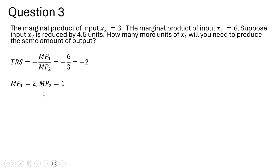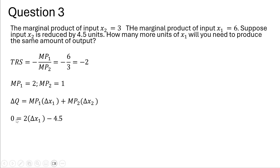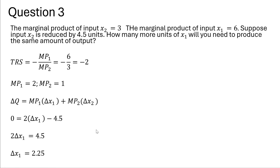Just maintaining that 2 to 1 ratio. Setting up the formula, setting the change in Q equal to 0, and then plugging in the remainder of the values and simplifying. We're going to have to increase input 1 by 2.25 units to maintain the same level of output.